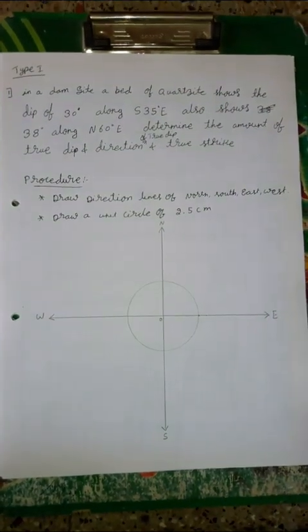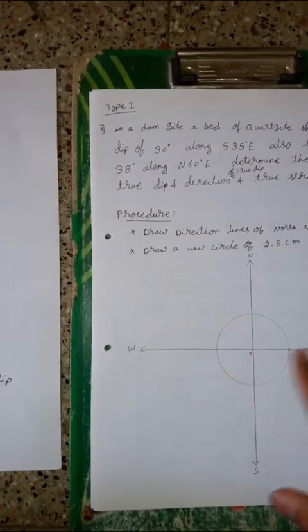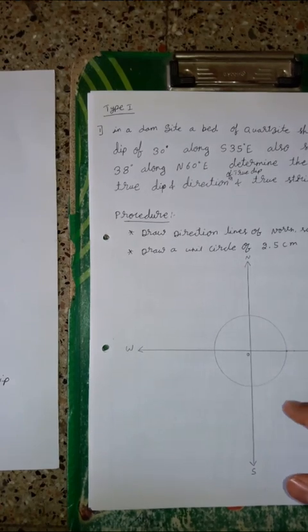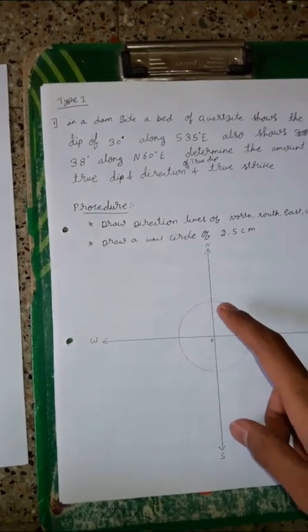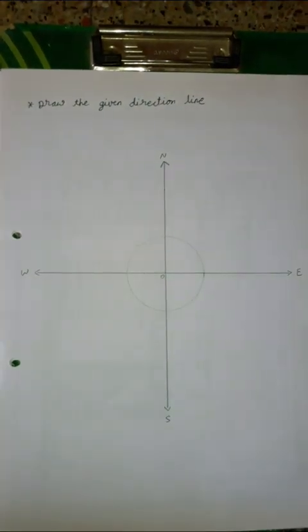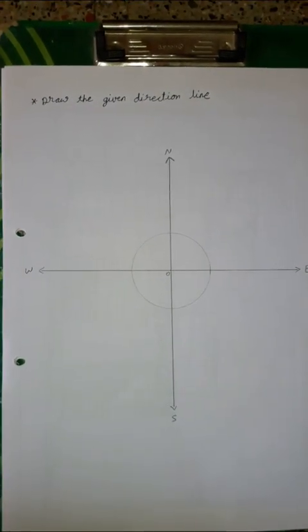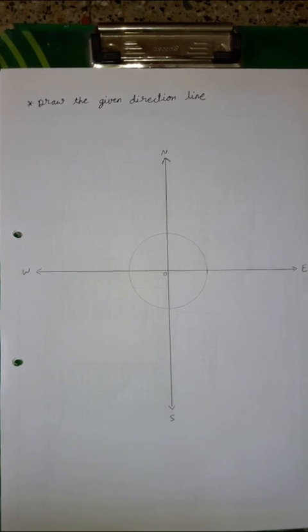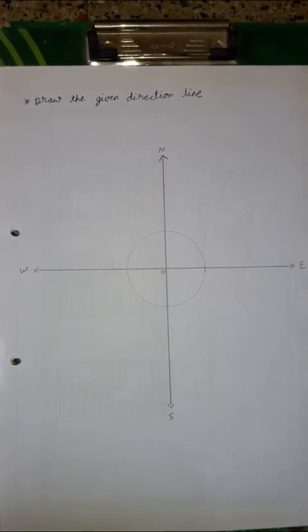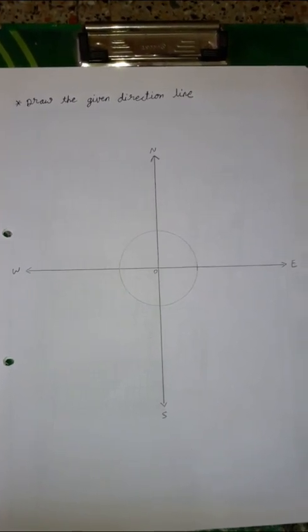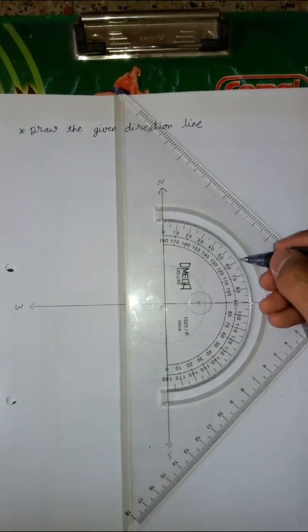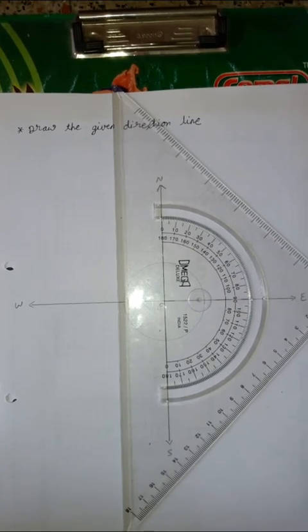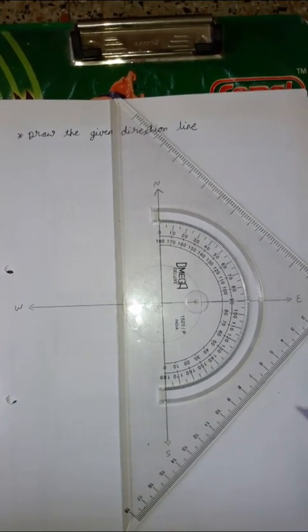Let's start solving this problem. First, draw the direction lines: north, south, east, west. Then draw a unit circle of 2.5 cm. Draw the given direction lines — they have given south 35 degrees east and north 60 degrees east.